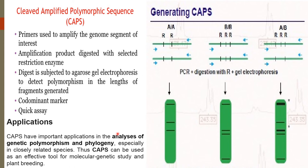The applications of Cleaved Amplified Polymorphic Sequence include analyzing genetic polymorphism and phylogeny, especially in closely related species. Thus, CAPS can be used as an effective tool for molecular genetic study and plant breeding.